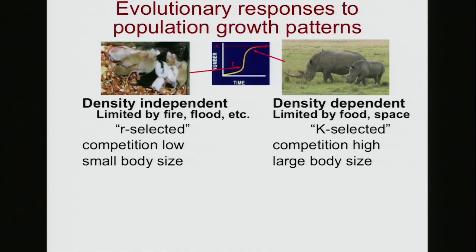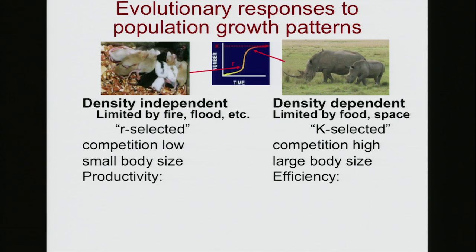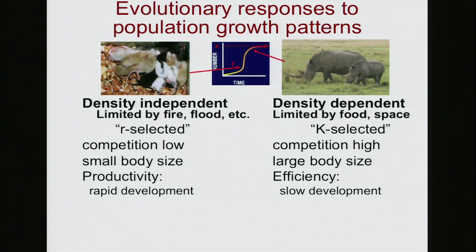R-selected species tend to be very small, and they're the ones most subject to density-independent factors. The ones mostly up against the carrying capacity tend to be large. You get a real difference in productivity versus efficiency between the two. R-selected species grow up quickly, whereas K-selected species try their best to convert limited resources into just one or two offspring at a time.